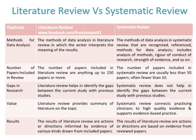The methods of data analysis in a Literature Review involve the writer interpreting the meaning of the results, while the methods of data analysis in a Systematic Review use recognised, referenced methods for data analysis, including analysis of methods, rigour of conduct of research, strength of evidence, and so on. The number of papers included in a Literature Review can be anything up to 150 papers or more, while the number of papers in a Systematic Review is usually fewer than 50, and often fewer than 10.